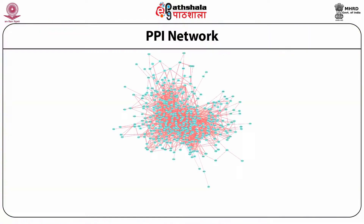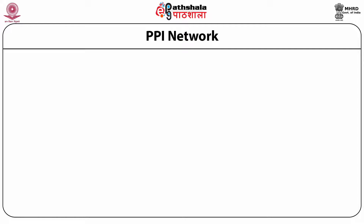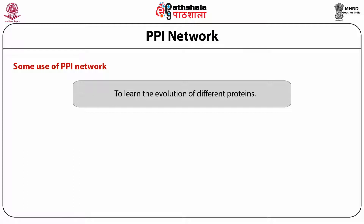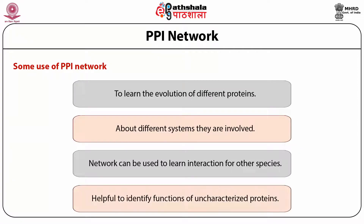Protein-protein interaction (PPI) network is another class for identifying protein-protein interactions. The network represents interactions among proteins where each node represents a protein and each link represents an interaction. This kind of network can be identified using PPI network analysis. The network of proteins encoded by radiation-sensitive genes in mouse, rat, and human can show what kind of interactions and biochemical reactions happen in mammalian bodies. PPI networks can be used to learn the evolution of different proteins, interactions of other species, and help identify functions of uncharacterized proteins.